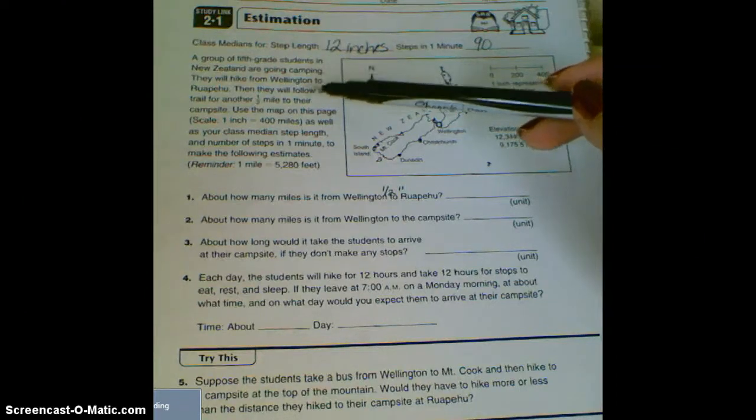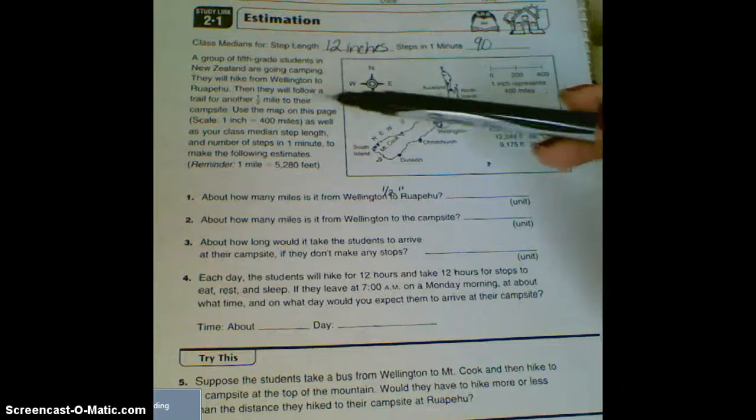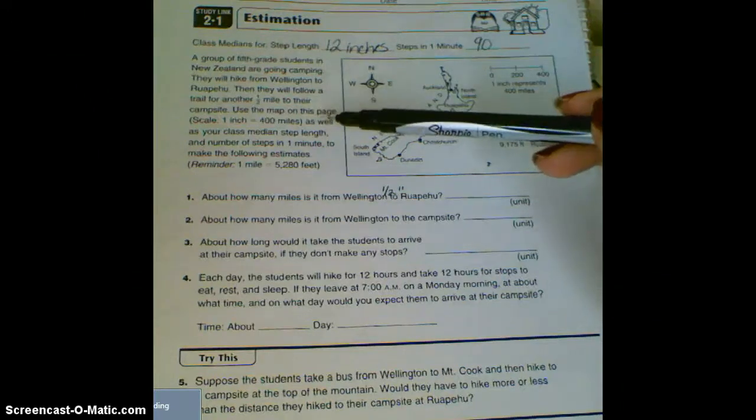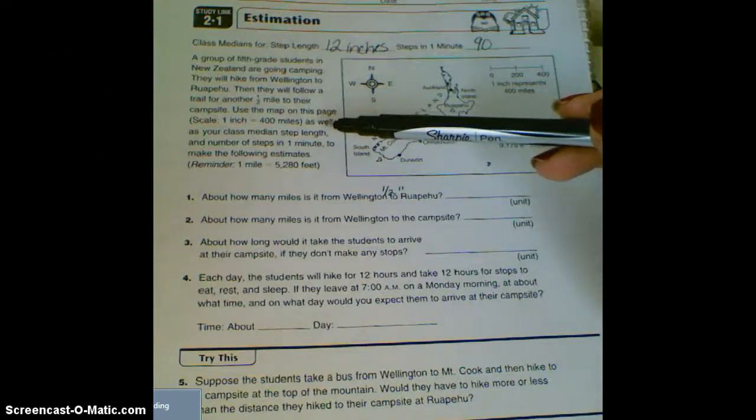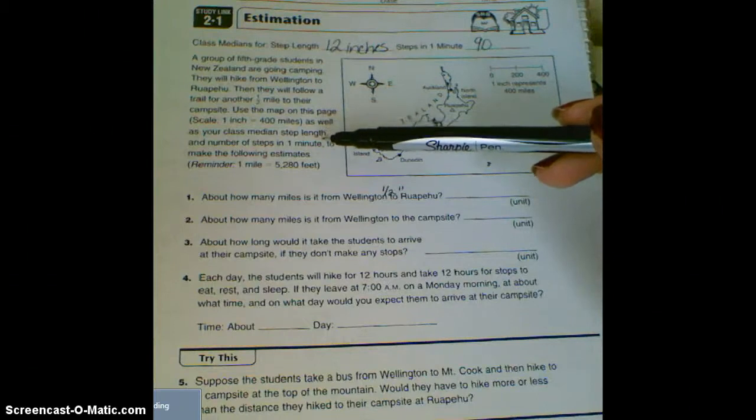Let's read the directions. A group of fifth graders in New Zealand are going camping and they will hike from Wellington to Rampahoo, and then they will follow the trail another half mile to their campsite. Use the map on this page. The scale is one inch equals 400 miles, as well as your class median step length and the number of steps in a minute to make the following estimates. A reminder: one mile equals 5,280 inches.